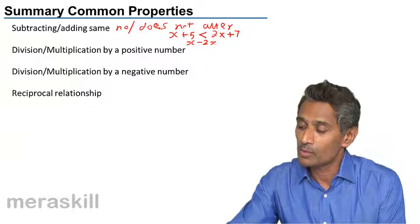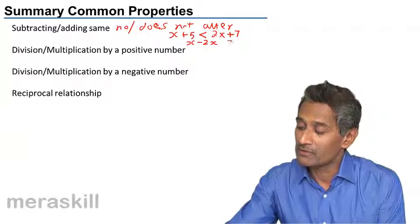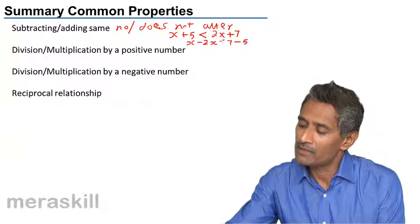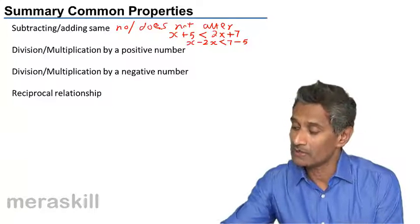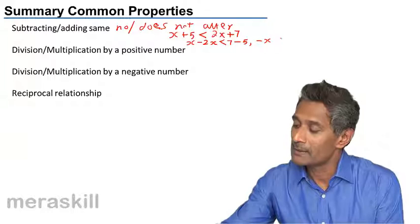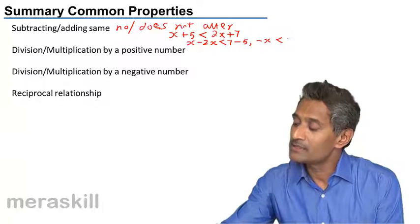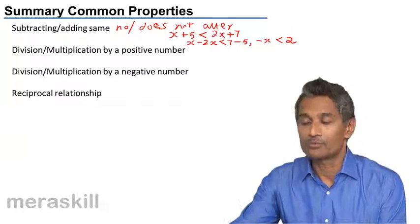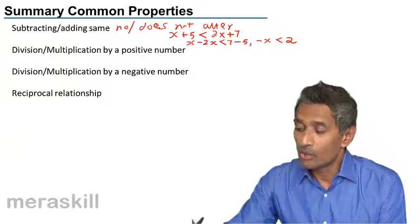You are doing x minus 2x and here it is 7 minus 5, and the inequality continues to remain the same, which means it turns to minus x less than 7 minus 5, which is 2.